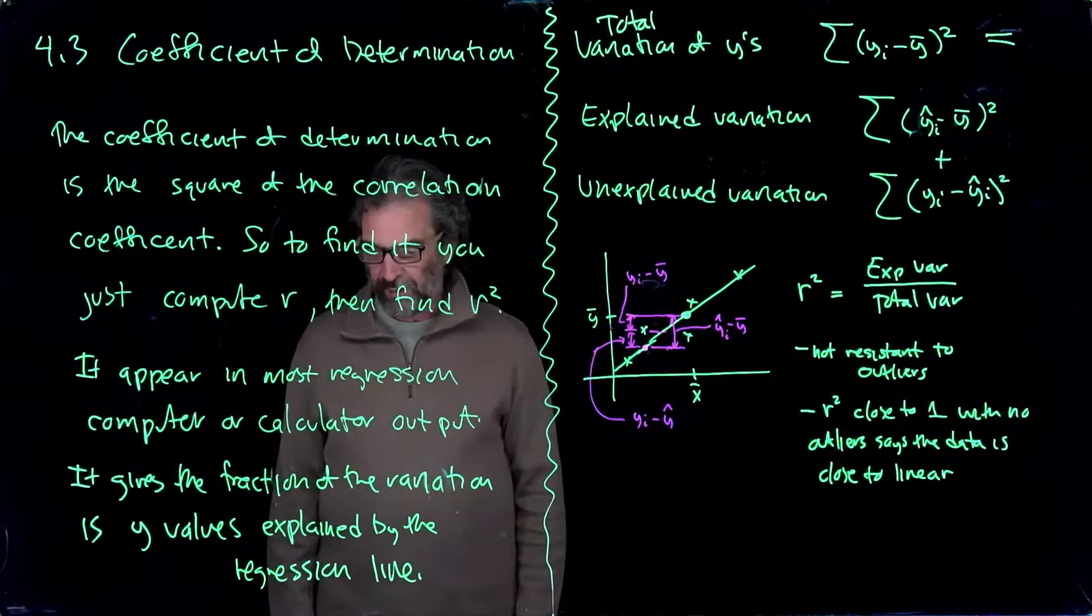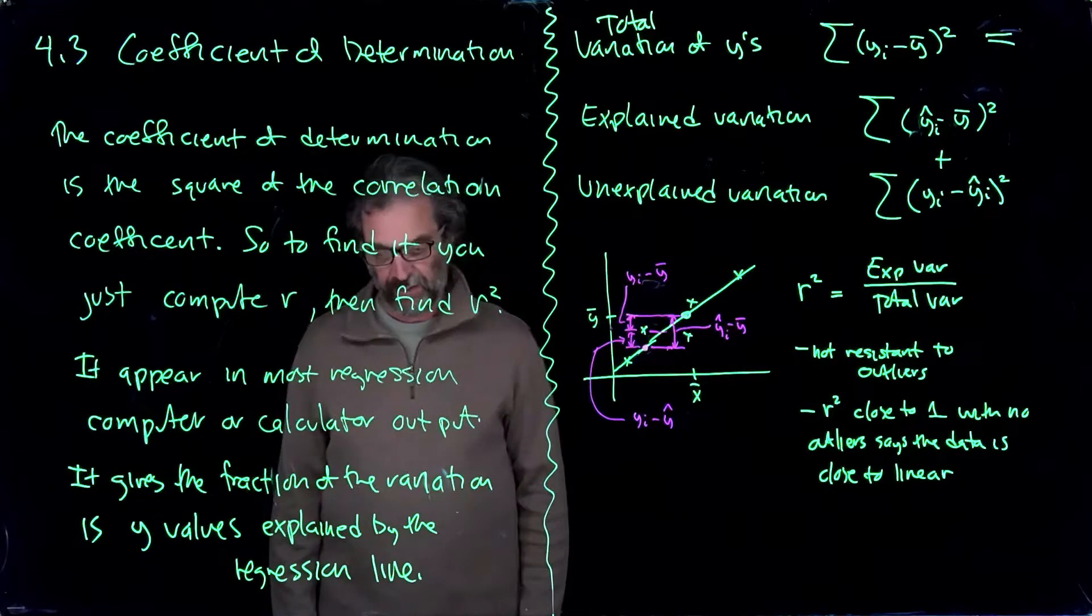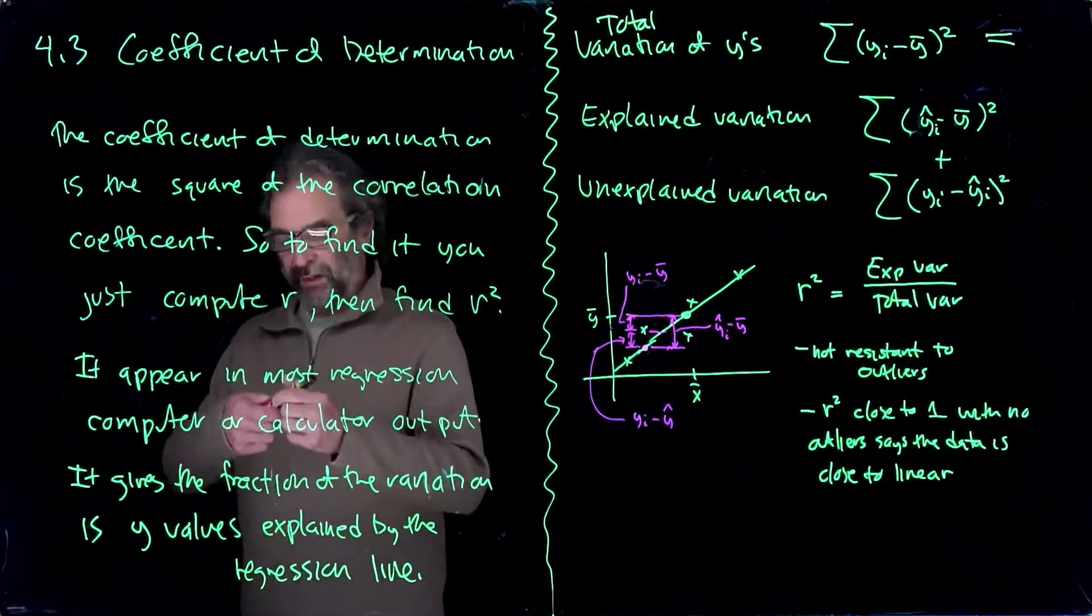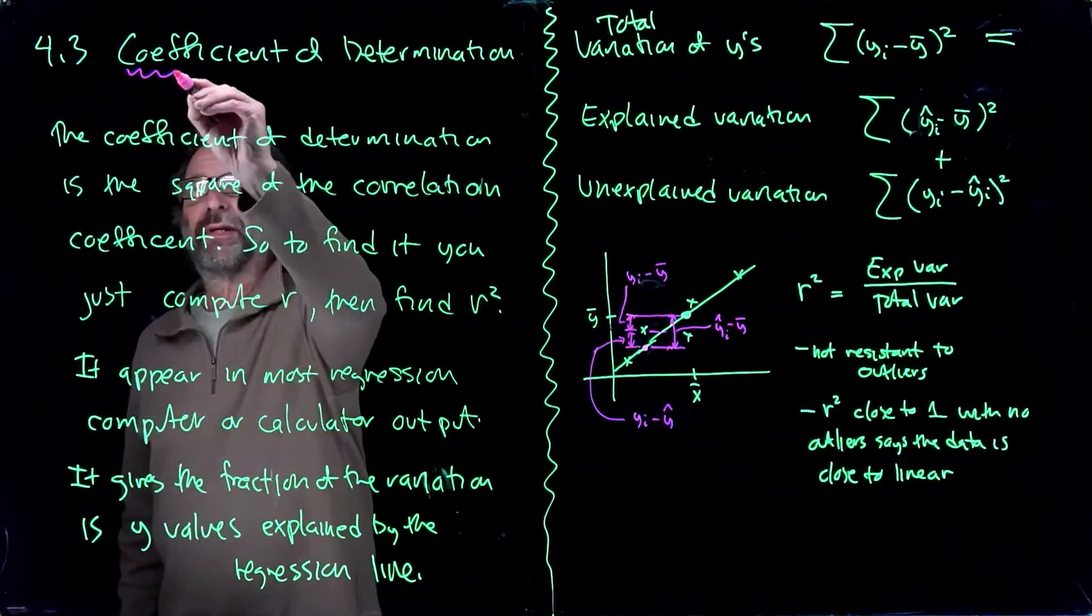Okay, we're in the last section of chapter 4. Yeah, the last section of chapter 4 is correct, section 4.3. It's about the coefficient of determination.